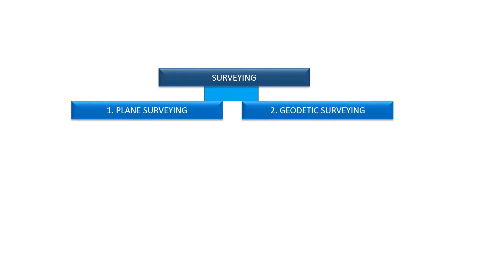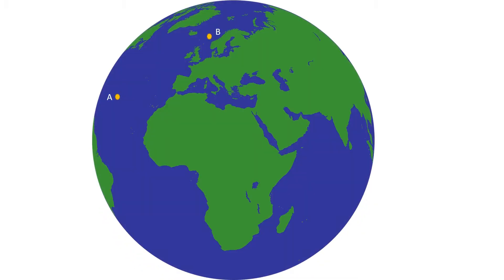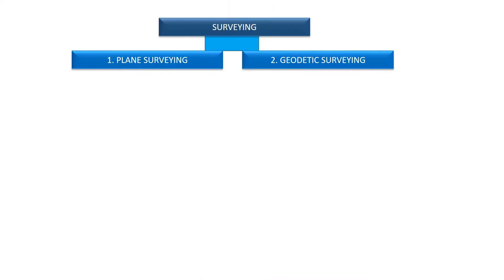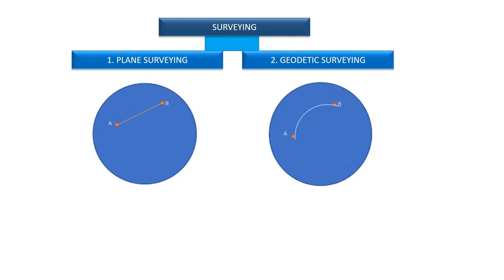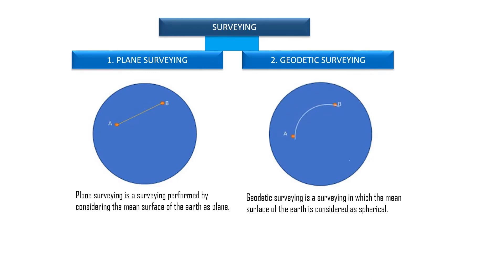Among various classifications of surveying in civil engineering, the two major classifications are Plane Surveying and Geodetic Surveying. For instance, consider two points A and B on the Earth's surface. While measuring the distance between A and B, the line AB can be considered a straight line if we assume the Earth's surface is flat. But when we consider the curved surface of the Earth, line AB is a curved line. When surveying is performed by considering the curved survey line following the spherical shape of the Earth, it is called geodetic surveying. When we neglect this curvature, we consider all survey lines as straight lines — this is the plane surveying method.